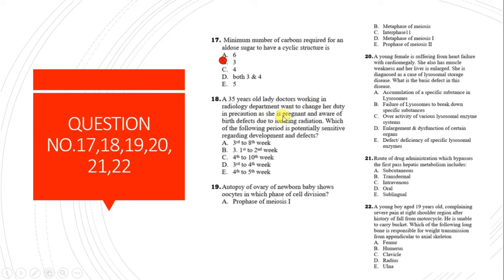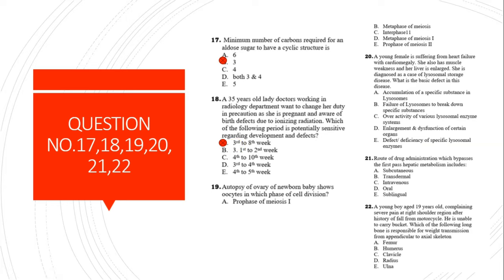Question 18: A 35-year-old woman working in a radiology department wants to change her duty as she is pregnant and aware of harmful effects of ionizing radiation. Which period is potentially sensitive regarding developmental defects? The correct answer is three to eight weeks, because this is the susceptible period of embryonic development when teratogenic effects are most commonly seen.